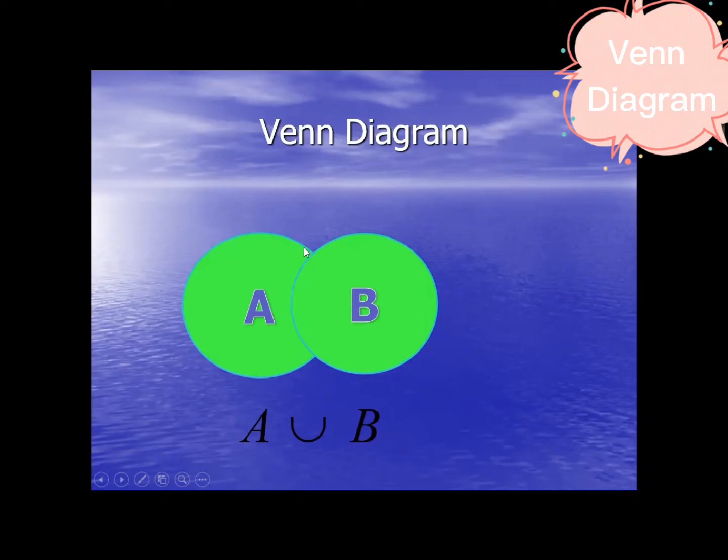Here you are going to shade everything inside A and B. So that is union, A union B - all the elements found in A and found in B.